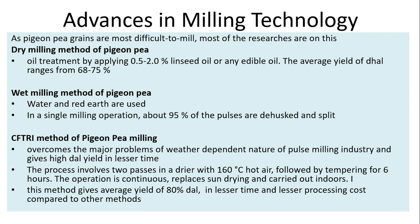Wet milling method of PGNP: water and red earth are used in a single milling operation; about 95 percent of the pulses are dehusked and split. CFTRI method of PGNP milling overcomes the major problem of the weather-dependent nature of pulse milling and gives high dal yield in lesser time. The process involves two passes in a dryer with 160 degree Celsius hot air, followed by tempering for six hours. After tempering, the operation is continuous, replaces sun drying, and is carried out indoors, giving an average yield of 80 percent dal in lesser time and lesser processing cost.